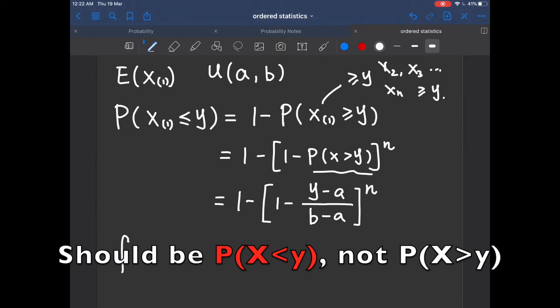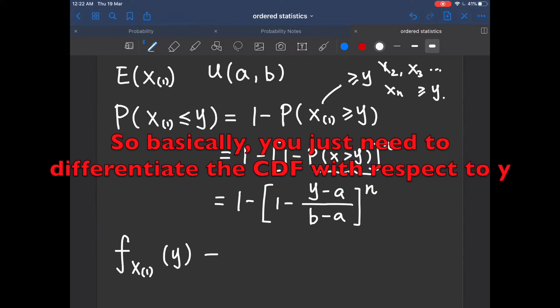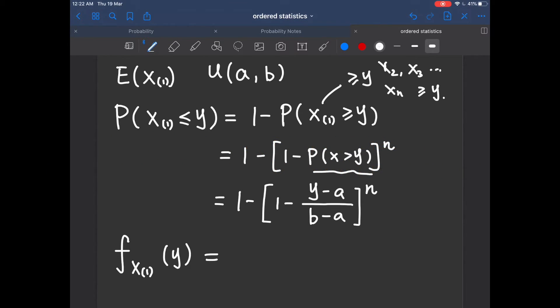So from here, we are able to compute the density function of X1 at the value of y. I'm going to leave out the computation detail as I will attach a document that writes the detail of all the computation, so you don't have to worry about it. Right now, I'm going to tell you that the density function is actually n over b minus a multiply b minus y divided by b minus a to the power of n minus 1.